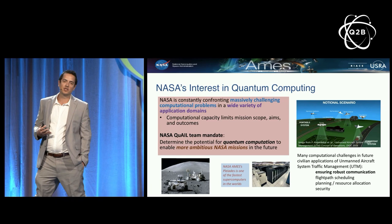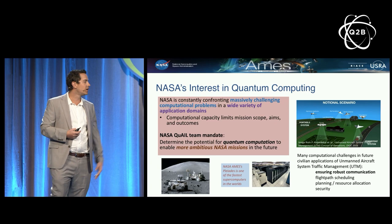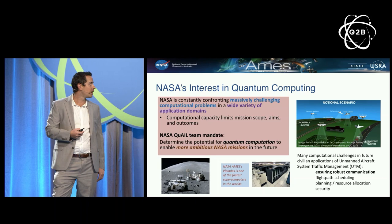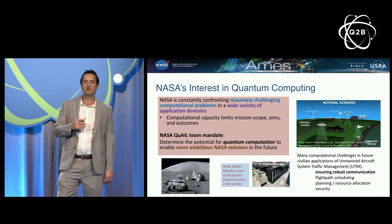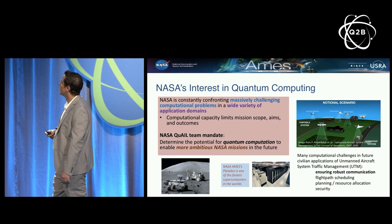As an example, at NASA Ames just up the road, we host Pleiades, which is one of the world's fastest supercomputers — of course, it depends on the benchmark. And one can imagine from communicating between rovers on the moon, to general space missions, planning, scheduling, to aeronautic challenges of tomorrow, these computational problems are ubiquitous.